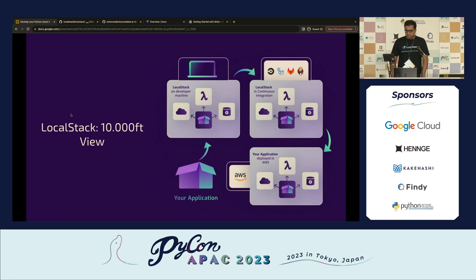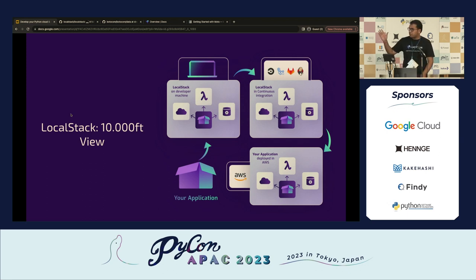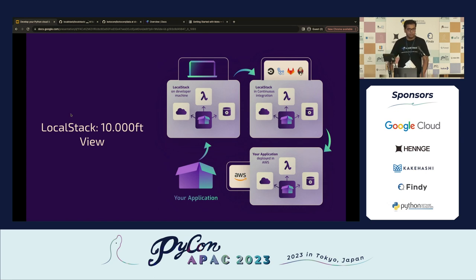From a 10,000-foot view, LocalStack isn't replacing AWS — AWS has massive data centers, multi-tenant architecture, and failovers. We don't want people using LocalStack in production. LocalStack is meant for local development and testing. It's most useful on developer machines — laptops, personal computers — or over continuous integration pipelines like CircleCI, GitHub Actions, and TravisCI. Once your application is working, you deploy to the live AWS cloud where it can scale to millions of users.